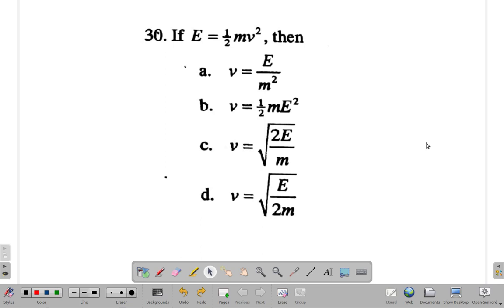All right, you've paused the video and you have done it. What did you get as the answer? Let's see what this thing is all about. If E is ½mv², then you're transposing for v, making v the subject of the formula. Now E is ½mv².